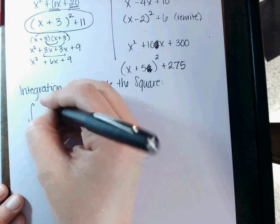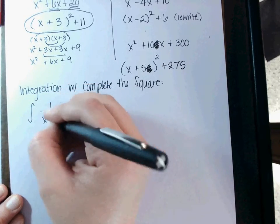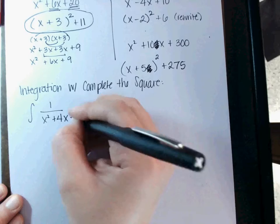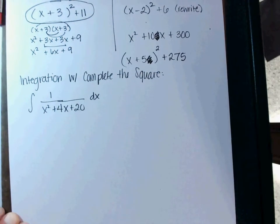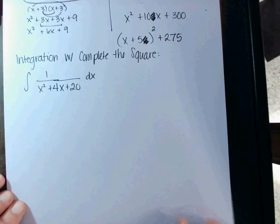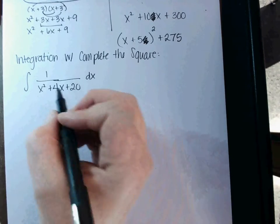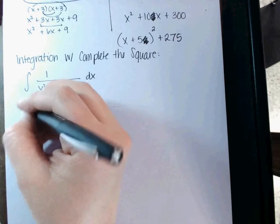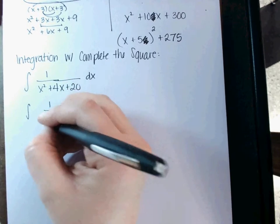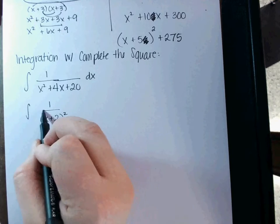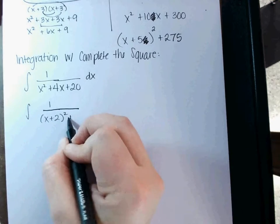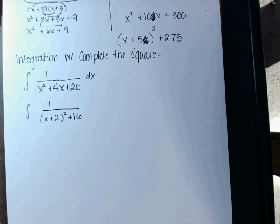Integral of 1 over x² plus 4x plus 20 dx. Okay, so the first thing I want to do is complete the square on the bottom. So how much of the 4 can I put in parentheses? 2. x plus 2. What's 2 squared? 4. How many of the 20 get left out? Plus 16. Everybody good to there so far?